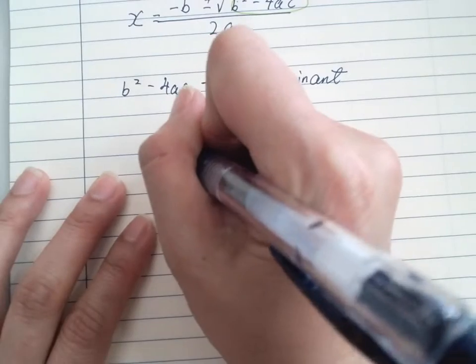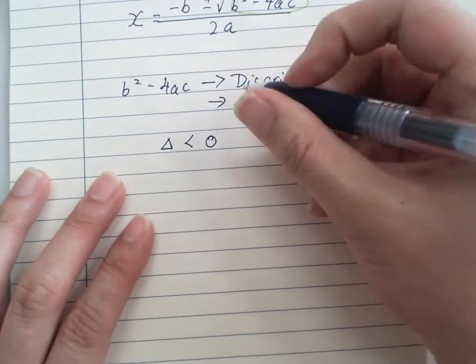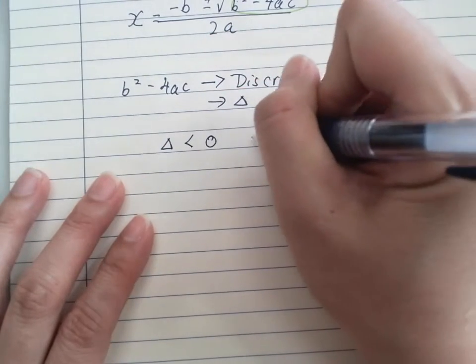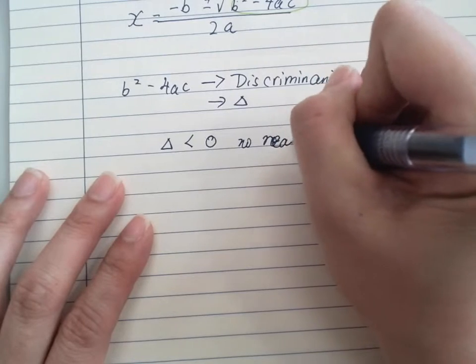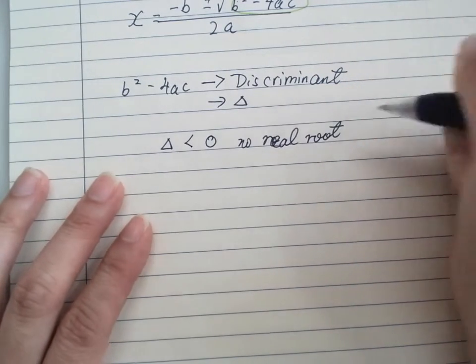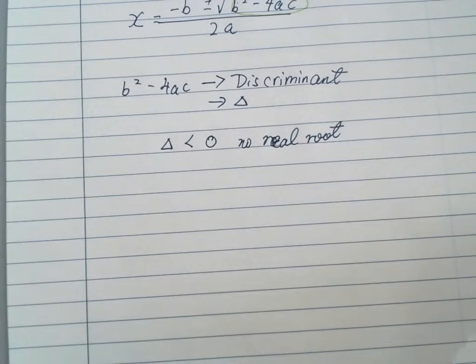Alright, so delta smaller than 0 will have no root, no real root. I mean, no real root means you still could calculate it with the unreal root, but that will be HL level. We'll leave it as it is.